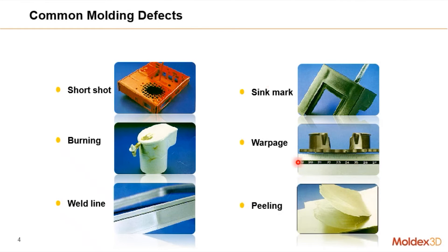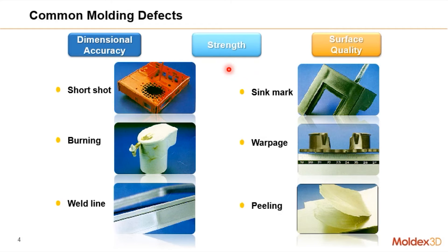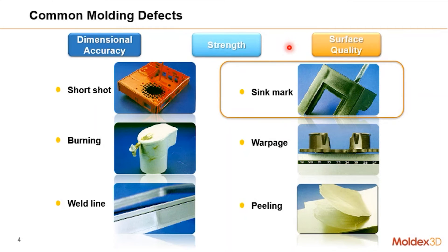Our focus for today is sink marks. Sink marks fall under surface quality issues. The previous defects we mentioned can broadly be classified into: dimensional accuracy or tolerance, performance of the part — in other words how it behaves under loading, strength, behavior, etc. — or surface quality. Sink marks fall under surface quality.